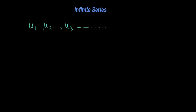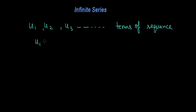In this video we are studying infinite series. If we have some terms like u1, u2, u3, and so on — these are the terms of any sequence. A series means the sum of all these terms of any sequence: u1 + u2 + u3 + so on. If the terms are infinite, it is called an infinite series.